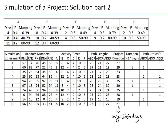For the probability of exceeding 27 days, I look at the exceedance column: it happened four times out of ten experiments, giving a 40% probability. If we're promising 27 days or less to our customer, we should be careful — there's a quite significant chance of exceeding that deadline.